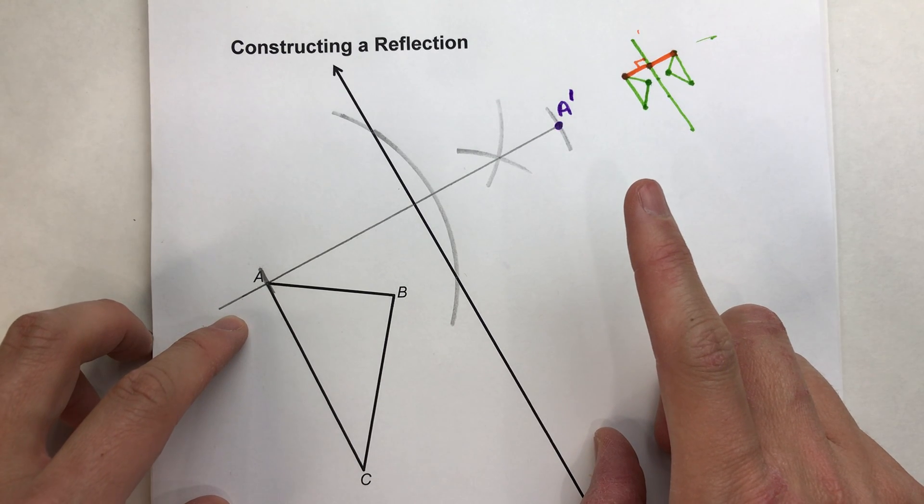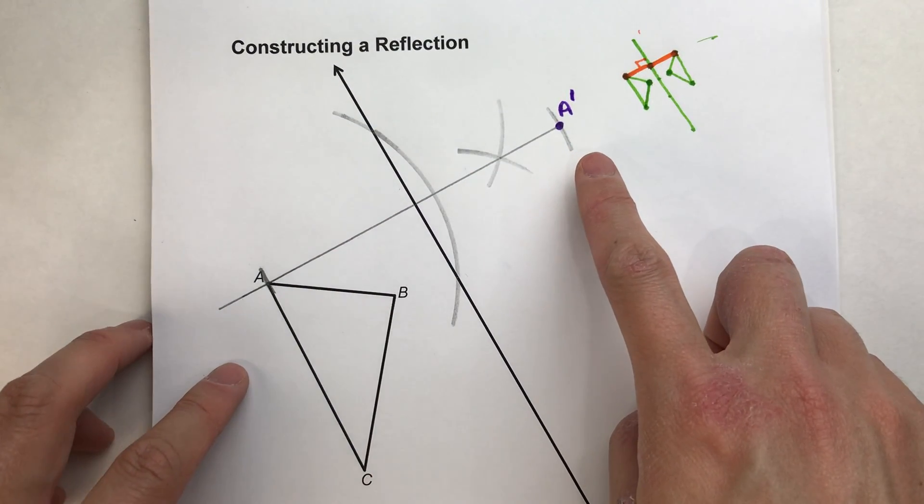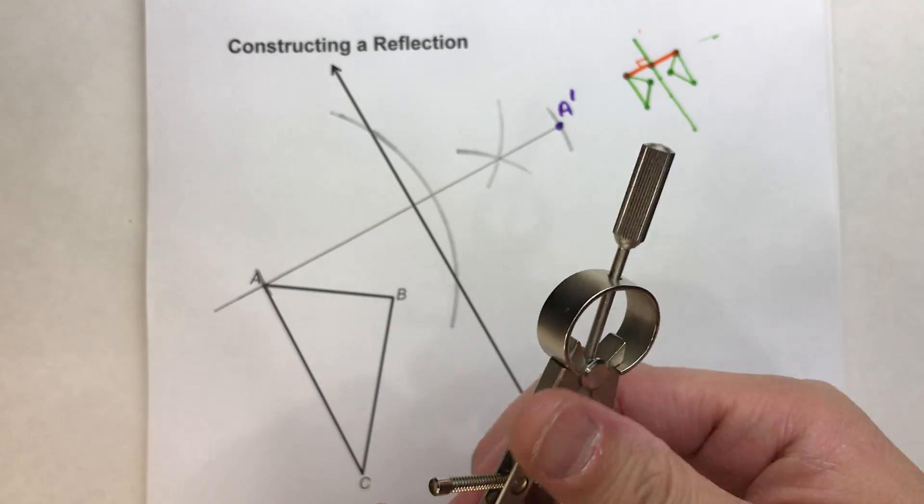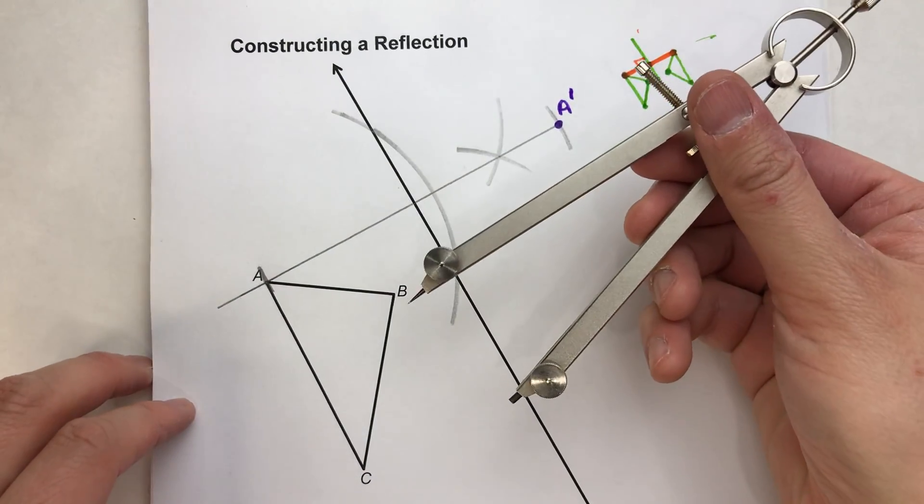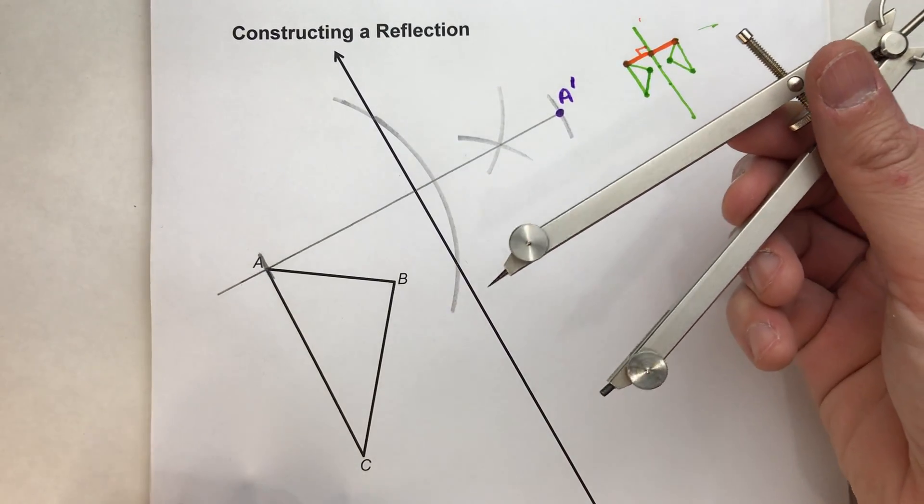Now what if I told you though there's a faster way to do this that doesn't involve constructing the perpendicular? And I'm going to show you that faster way right now. And it's faster because you don't have to change the compass setting so much. I'll show you what I mean.